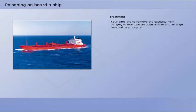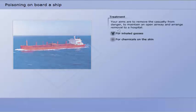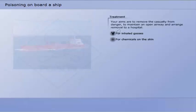To treat a poison casualty, your aims are to remove the casualty from danger, to maintain an open airway, and to arrange removal to a hospital.